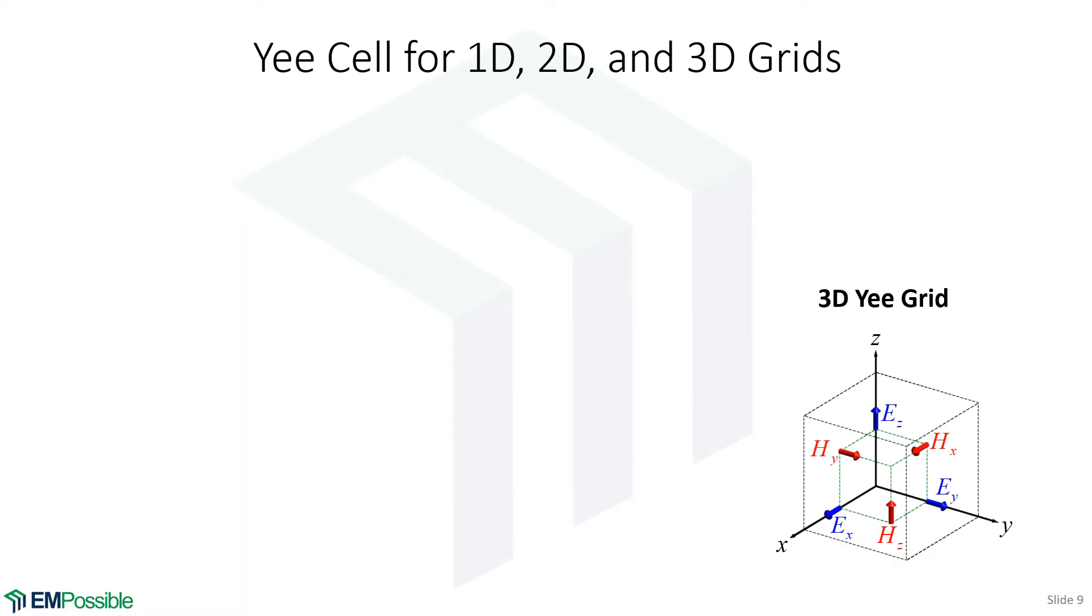Here is our Yee cell for a 3D grid. We very often do simulations in two dimensions, and maybe even one dimension. For two dimensions, we have two distinct modes. If we look at the 3D Yee cell, if we look at these top three components, that plane is what we will call the E-mode. We call it the E-mode because there's one electric field, two magnetic fields, and we'll put everything in terms of just the electric field.